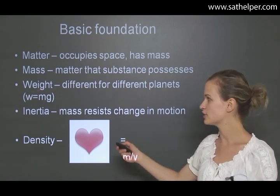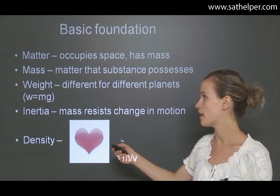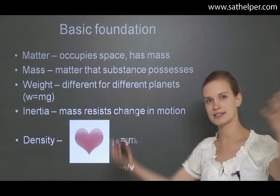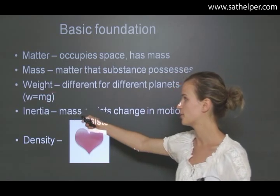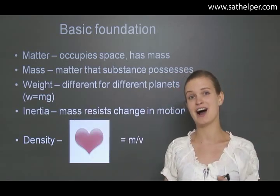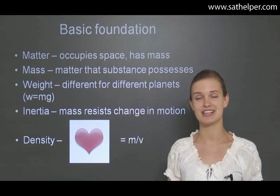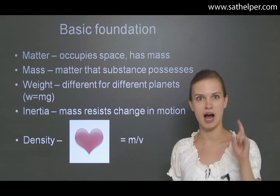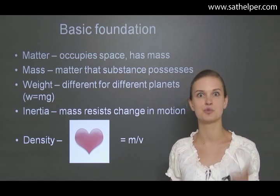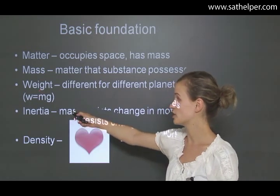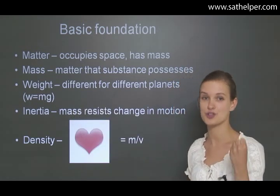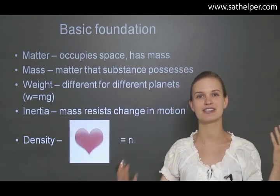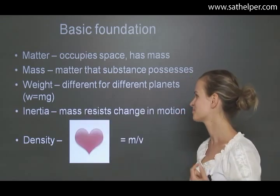Weight is related to mass by this equation: weight equals mass times G, which for Earth is 9.8 meters per second squared — that is the acceleration of gravitational pull. But if we were on a smaller planet somewhere far off in the galaxy and the gravitational pull was less, our weight would also be less. However, our mass would still be the same. So this quantity never changes — the mass of a substance never changes, unless you break it apart. But the weight can change depending on the different gravitational pulls present.